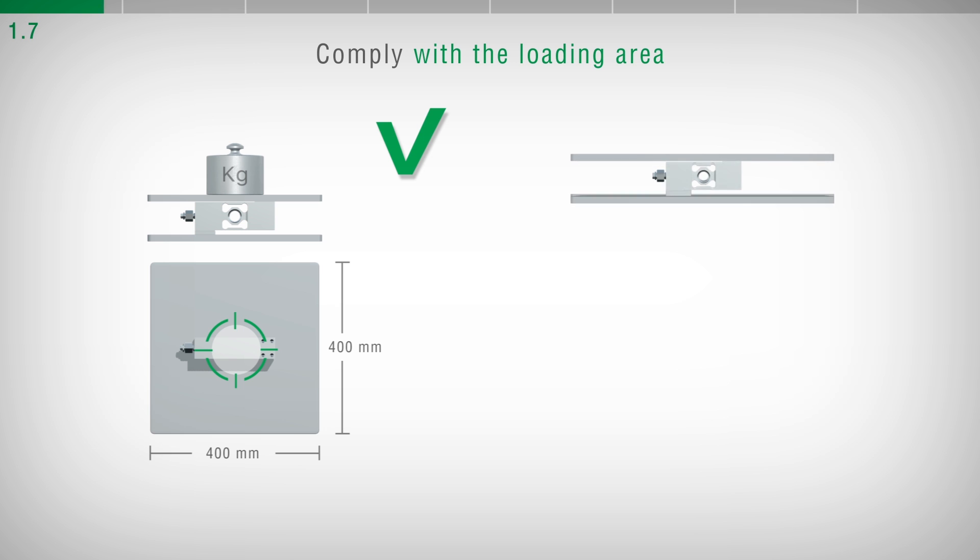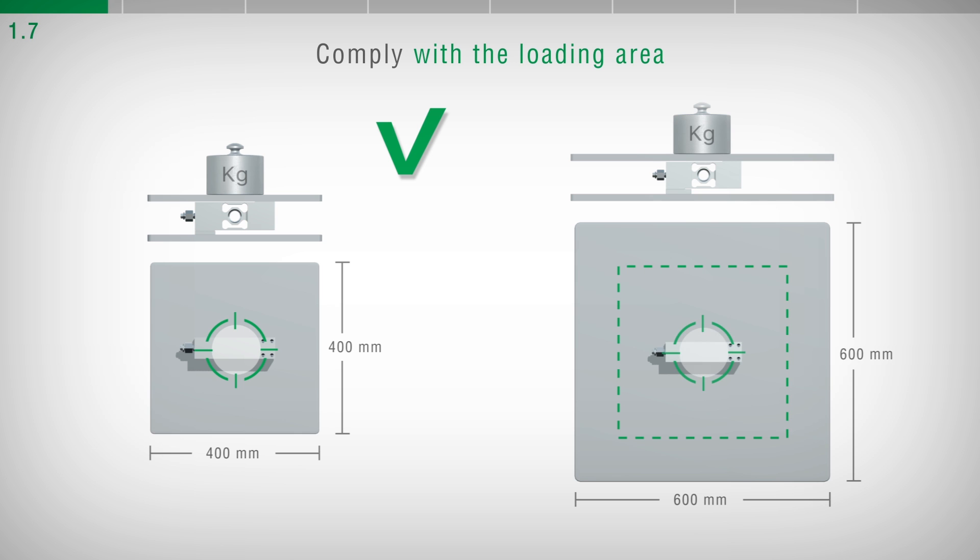By installing a structure with a larger size than that stated on the datasheet, or by applying an object that protrudes from the structure, it is possible to damage the single point load cell and, in any case, obtain an incorrect weight value.